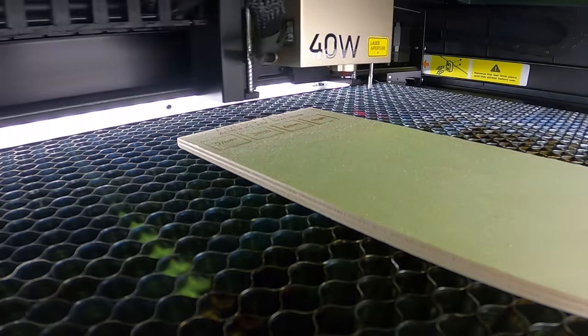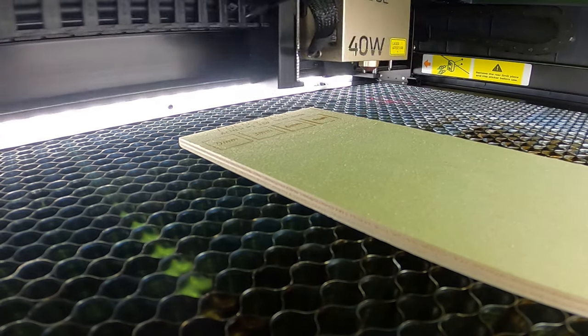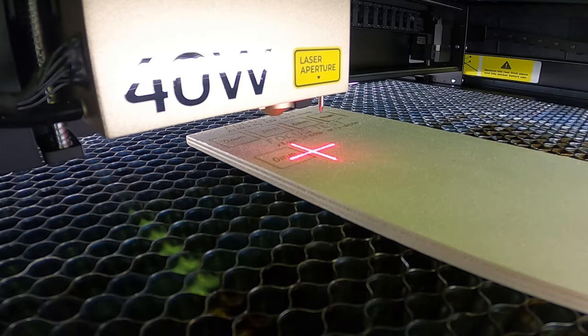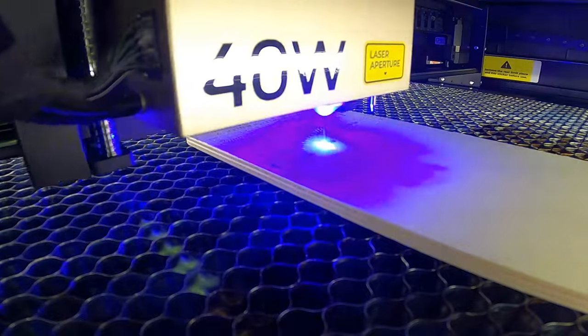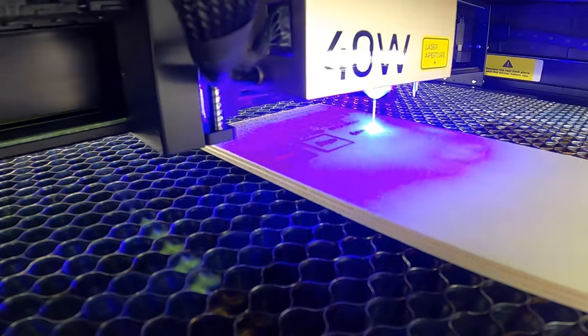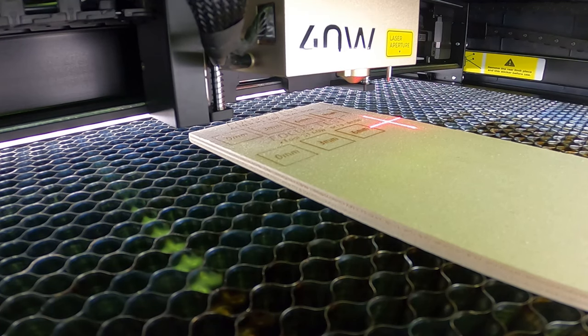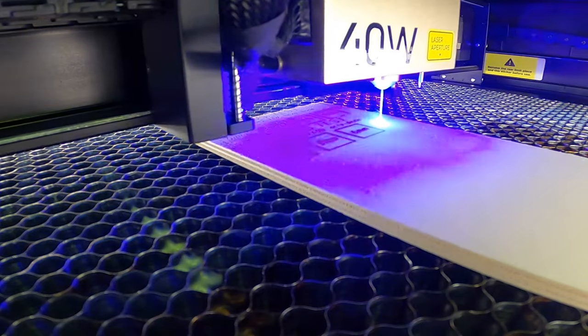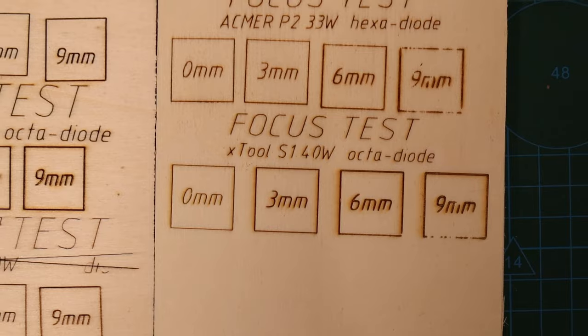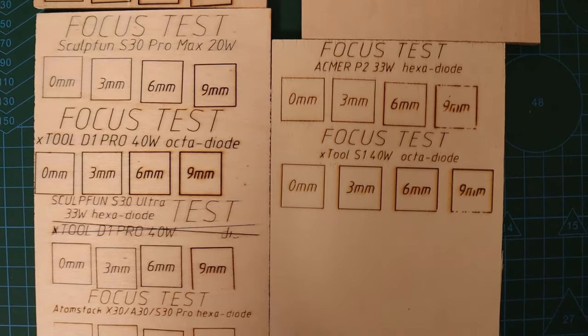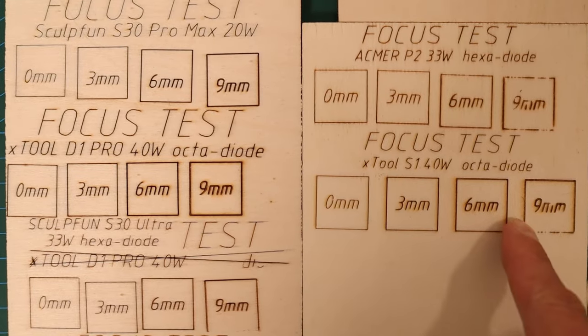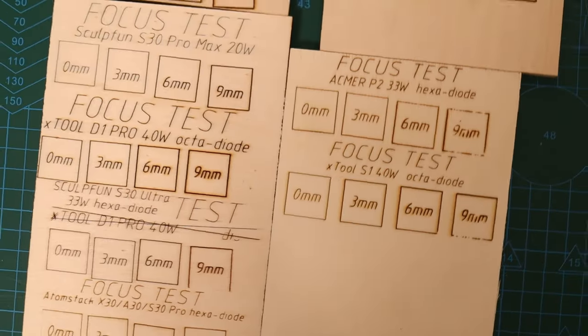Next test on the list is the focus distance test. First, I measured the ideal focus distance and engraved the first square with 0 mm written in it, which represents the optimal focus. Then, I raised the laser head by 3 mm and engraved the second square. The head was raised by another 3 mm for the third square. For the last bit, the head was raised 9 mm in total. This allows us to see how much the laser spot gets enlarged further away from the optimal focus which happens when you cut thick materials. The larger the laser spot, the worse the cutting performance. The X-Tool S1 did okay in this test. It was not the best, probably due to the laser module not being as tall as on other machines, as this affects the focal distance. You can check more detailed photos on my website HobbyLaserCutters.com.